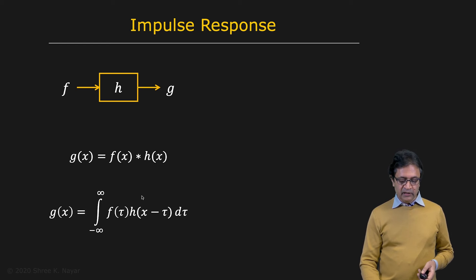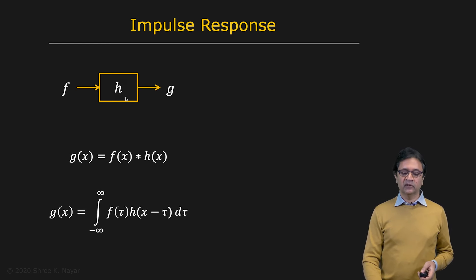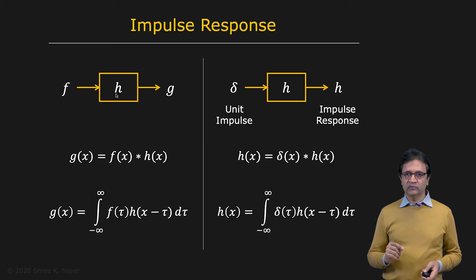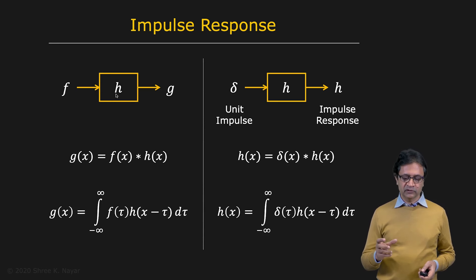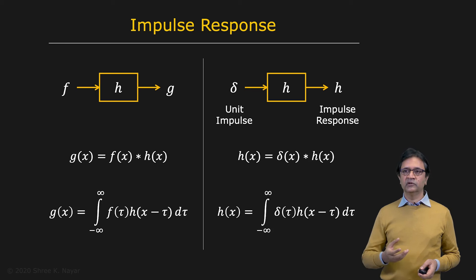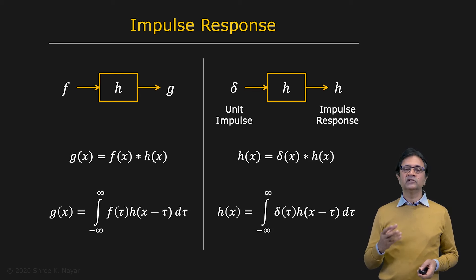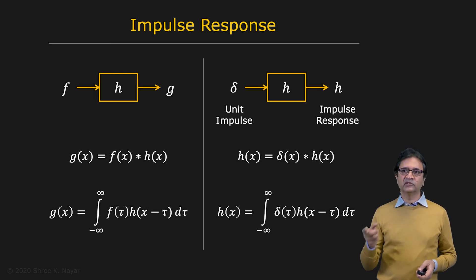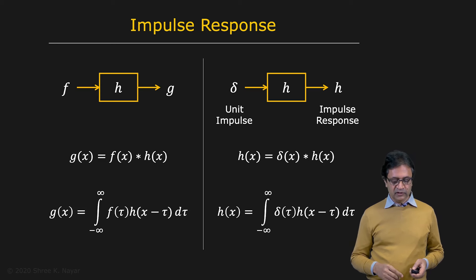Which means it's applying a convolution with some unknown function h — all you need to do is to hit it with an input which is the unit impulse function, and what comes out is h. The output is going to be h. And therefore, h is often referred to as the impulse response — the response to the impulse function — the impulse response of the system.